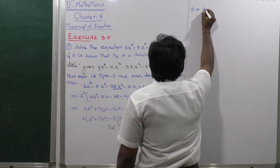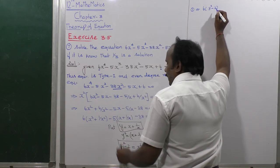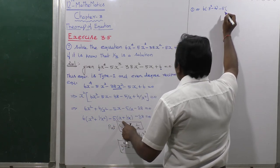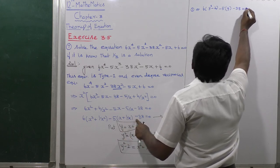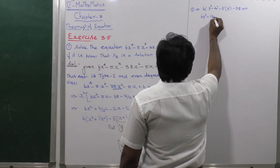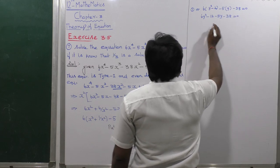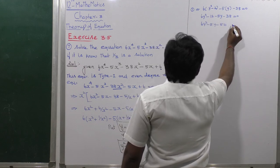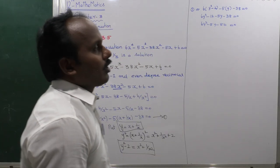Replacing x² + 1/x² with y² - 2 and x + 1/x with y: 6(y² - 2) - 5y - 38 = 0. Expanding: 6y² - 12 - 5y - 38 = 0, which simplifies to 6y² - 5y - 50 = 0. This is a quadratic equation in y.